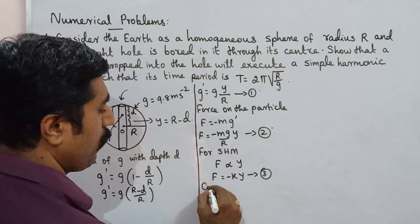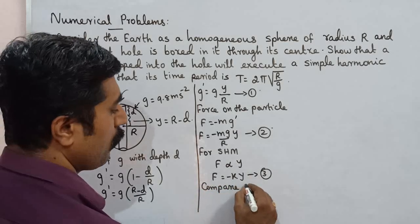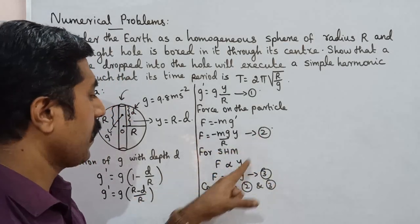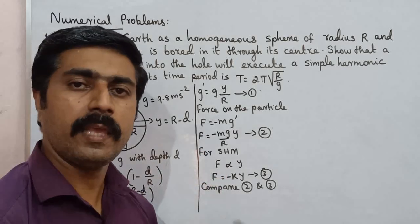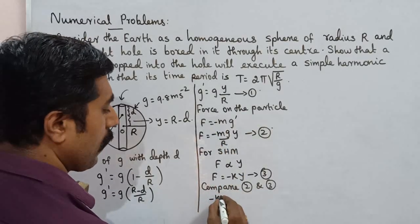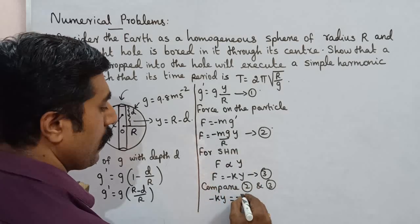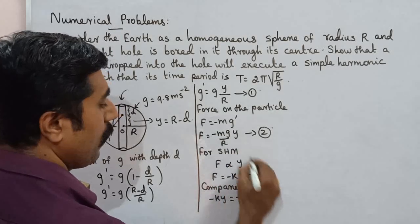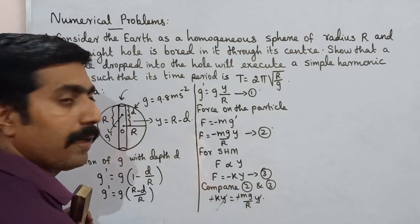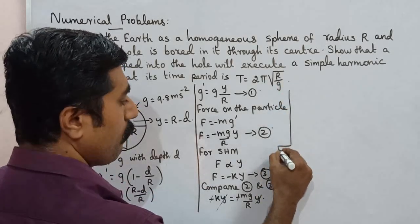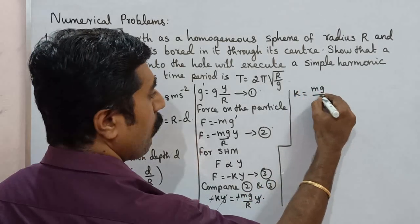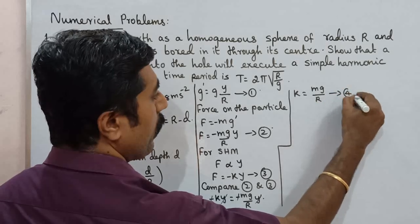So F is equal to minus K Y. This is equation number 3. Compare equation 2 and equation 3. The Y terms cancel, giving K is equal to M G by R. This is equation number 4.